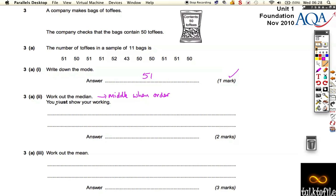We've got to put it in order. So 43 is the smallest, and then let's just cross it off. Then we've got 50, and we've got four of them. So we've got 50, 50, 50, and 50. That's 2, 3, 4 of them.